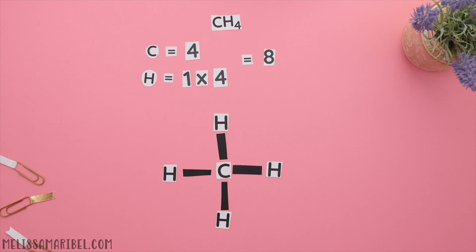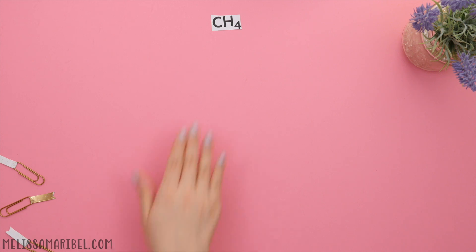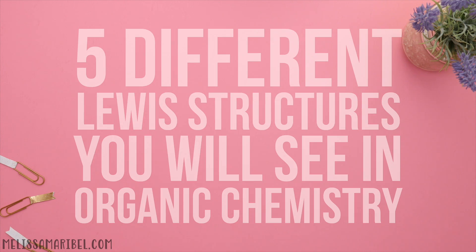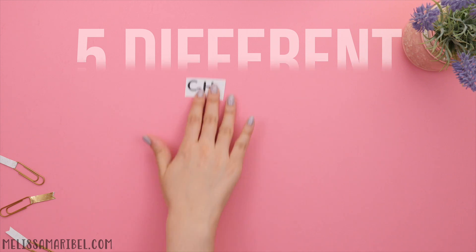You could have just drawn the single bonds first instead of drawing each valence electron, since the atoms have to bond regardless for Lewis structures. Now onto five different Lewis structures you'll see in organic chemistry.